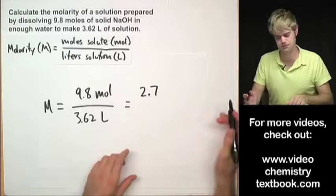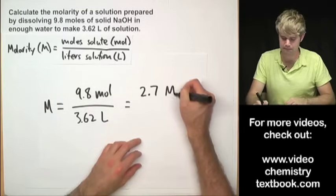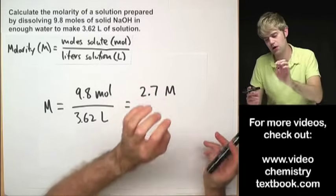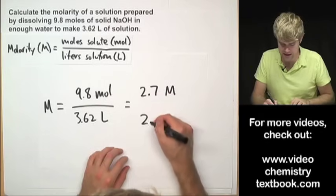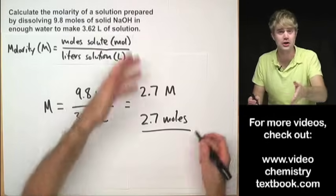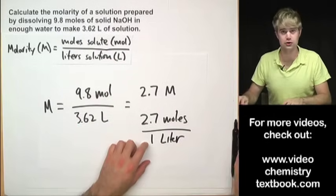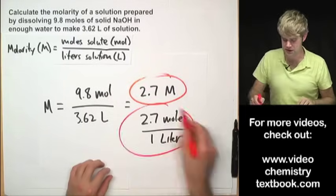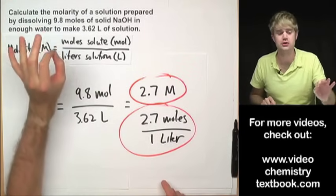What should the units be? When you find molarity, the final answer is in units of molar — capital M. So it's 2.7 molar. What 2.7 molar really means is that there are 2.7 moles of NaOH (the solute) for every 1 liter of the solution.